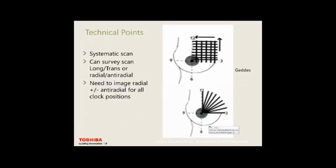Technically, how you survey doesn't matter — long and transverse or radial and anti-radial — the important thing is a systematic scan, quadrant by quadrant. I teach students to do transverse and longitudinal initially, quadrant by quadrant, overlapping about a third of the probe, scanning from out to in.